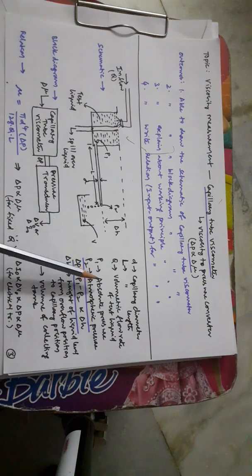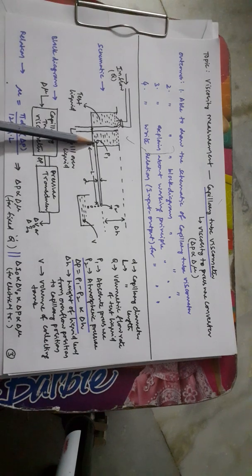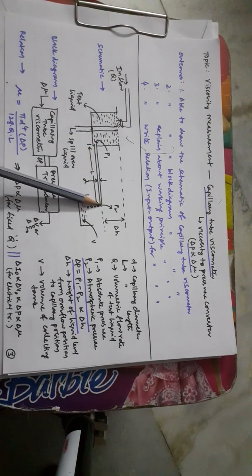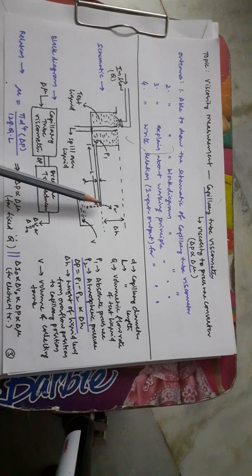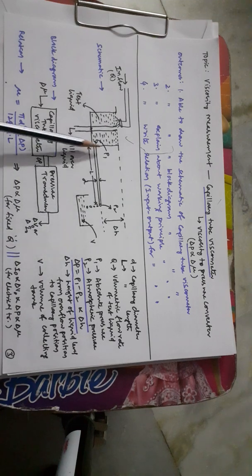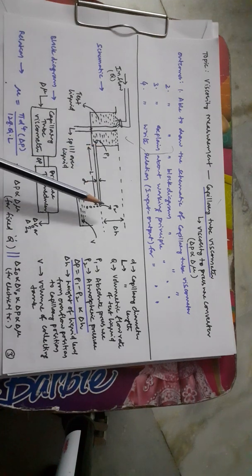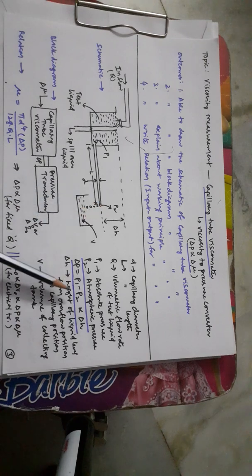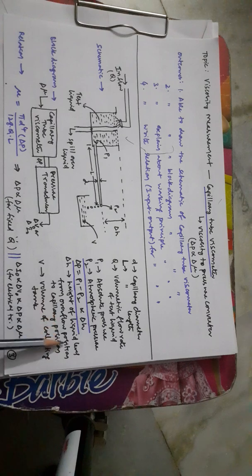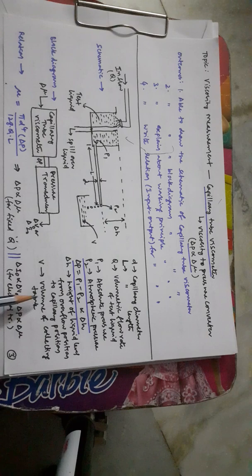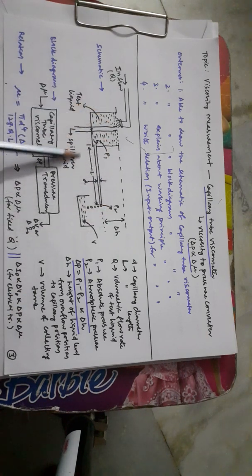P1 is the absolute pressure exerted at the capillary inlet, and the outlet is exposed to atmosphere so it is referred to as atmospheric pressure P2. The differential pressure delta P equals P1 minus P2, and it is proportional to delta H — the height of liquid level from the overflow position to the capillary position. Capital V is the volume of the collecting tank.